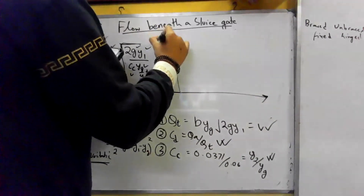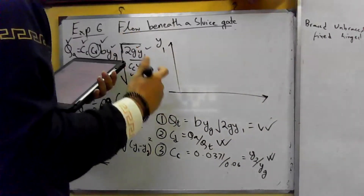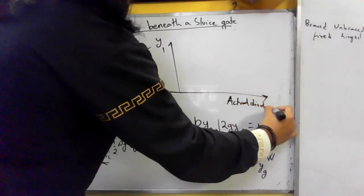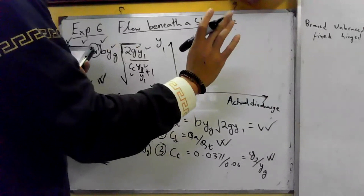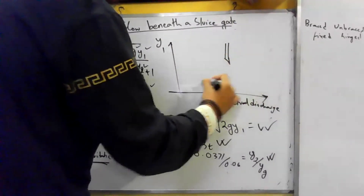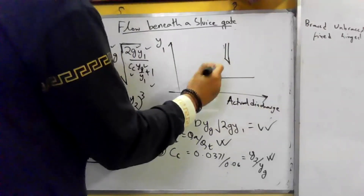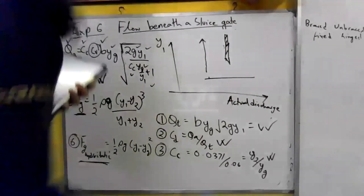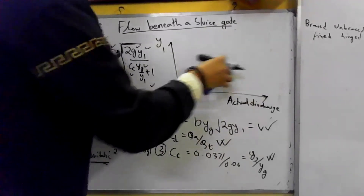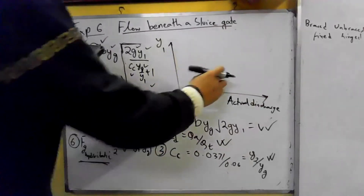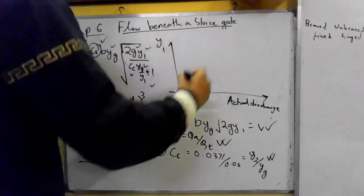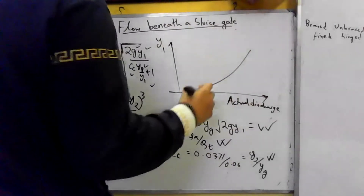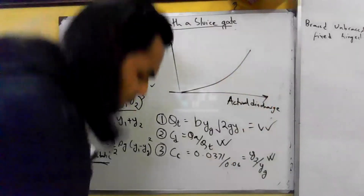Upstream depth Y1 — Y1 means greater and higher head. Y1 versus actual discharge: you can check the graph. We used Y1 and actual discharge. This graph shows the relationship — no problem. We plotted actual discharge against Y1.